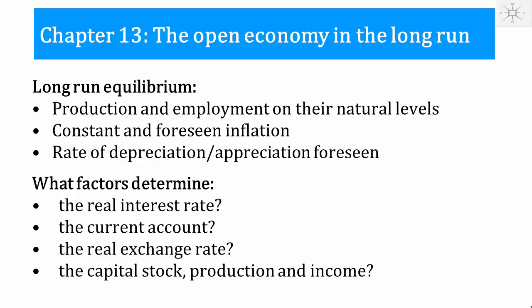In this chapter, we look at a long-run equilibrium where production and employment are on their natural levels, as determined in chapters 2 and 6. We consider a situation where there is a constant rate of inflation and this rate of inflation is foreseen — so there's perfect foresight about inflation. Also, the currency may be appreciating or depreciating, and that is also foreseen. So if there are inflation differences between countries, currencies may increase or decrease in value, but this is foreseen by the investors.